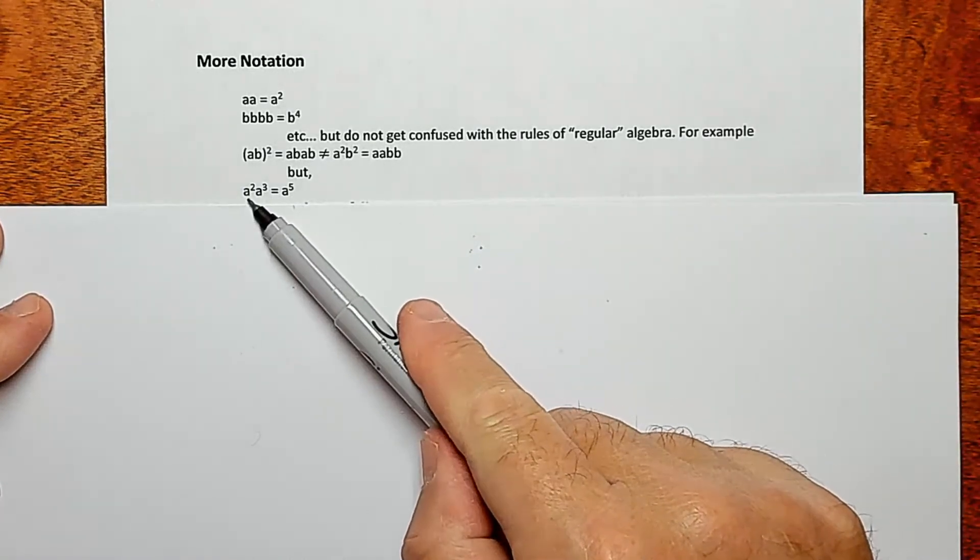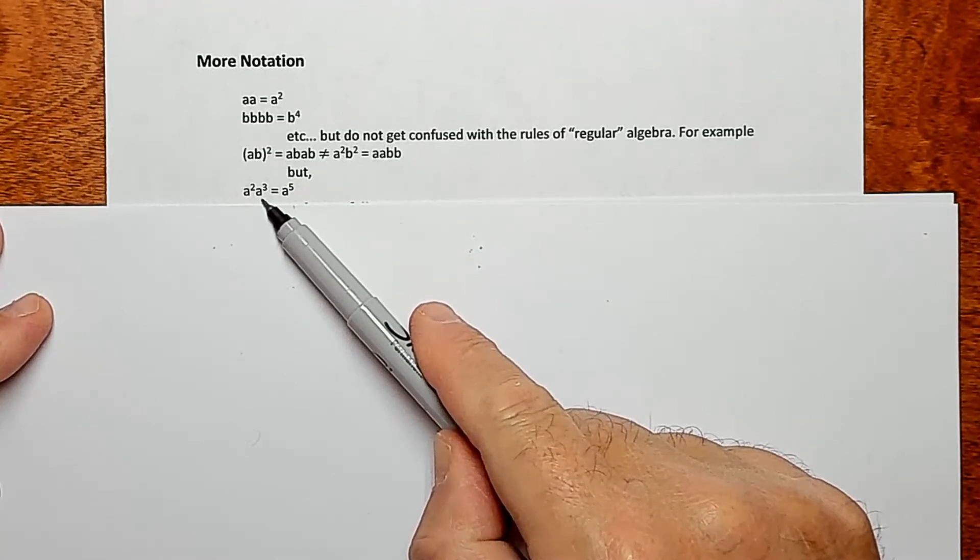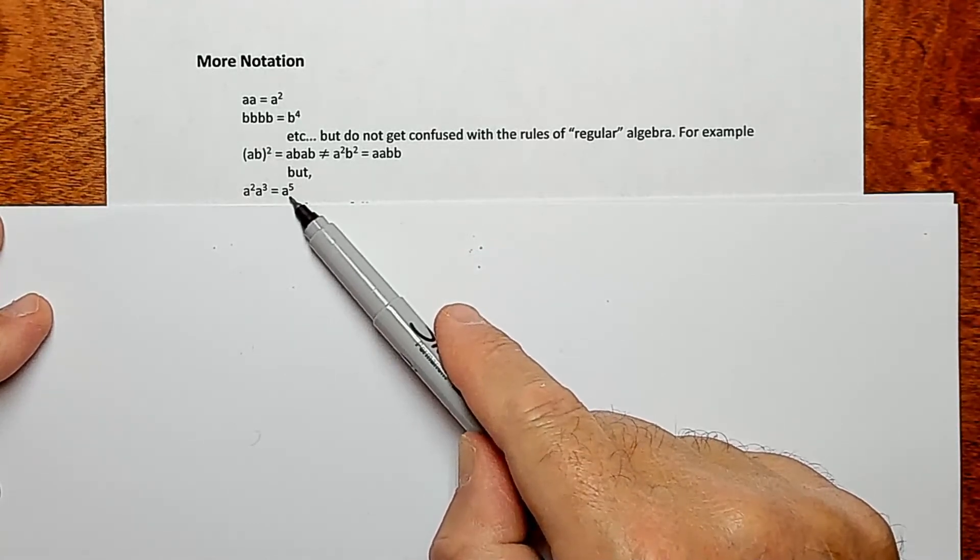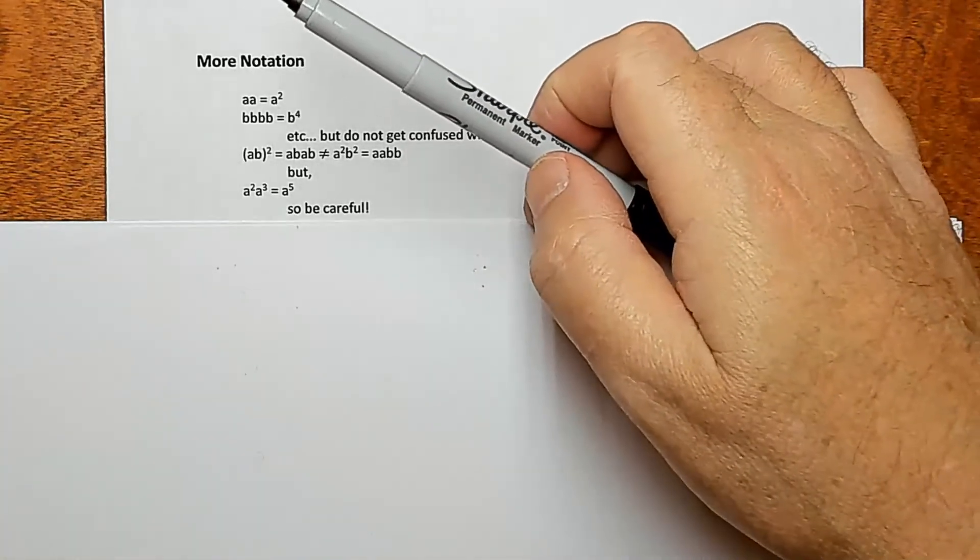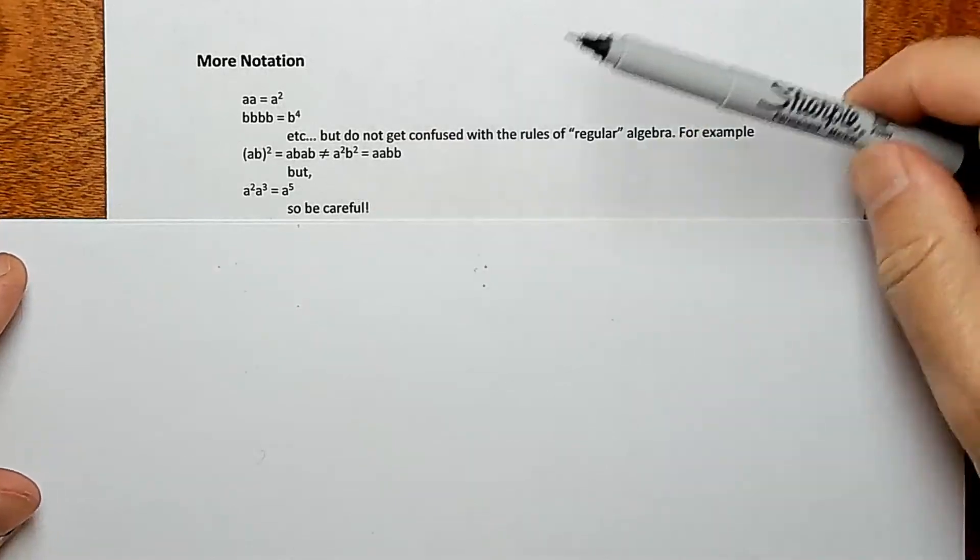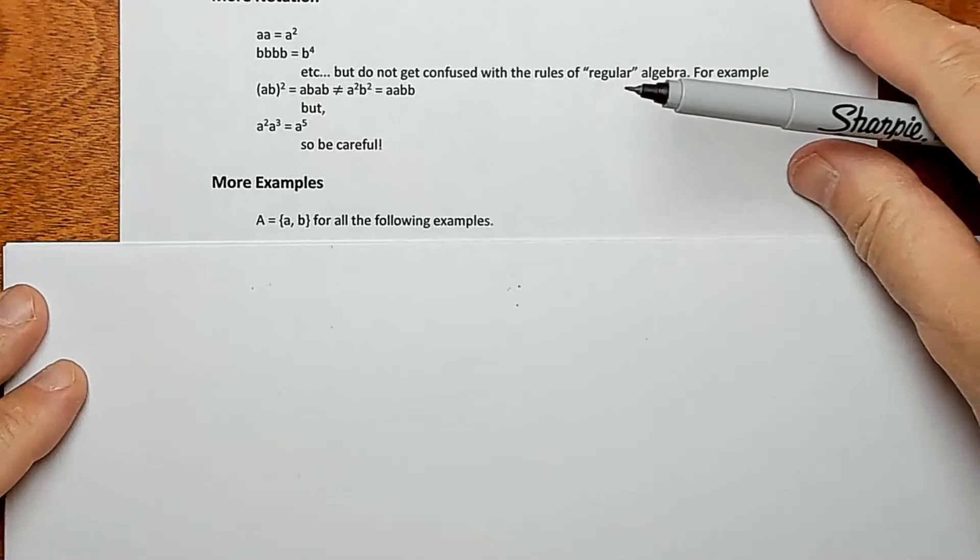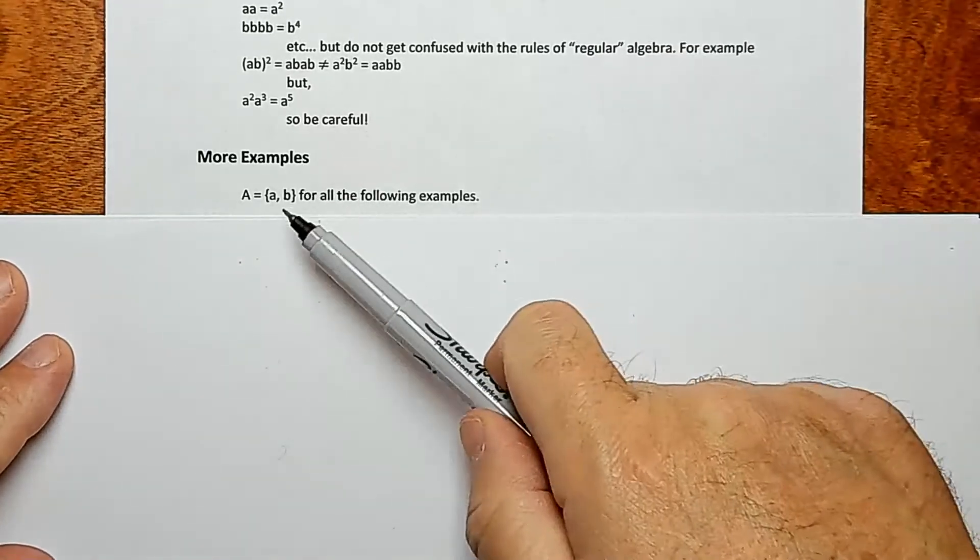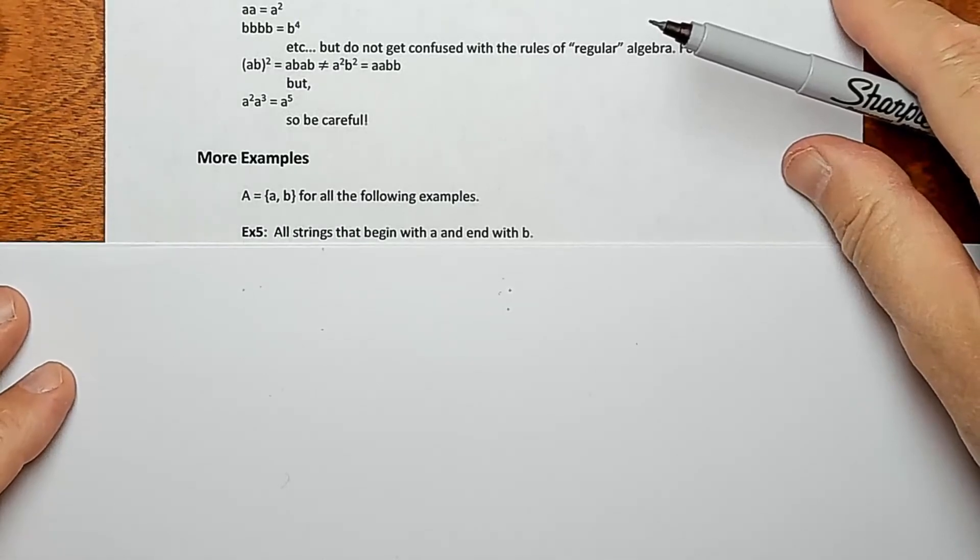Likewise, this notation would be meaning two A's and three A's, which is A^5, which is fine because they're all A's. But anyway, just be careful because order does matter here. So just slow down when you're messing with this notation. All right? We can do a couple more examples now. So here's our alphabet, AB, same alphabet.